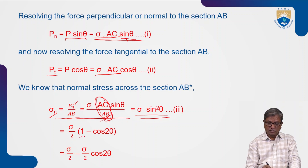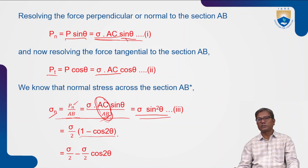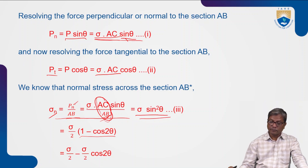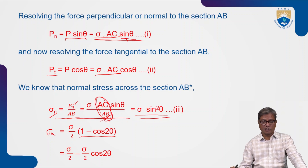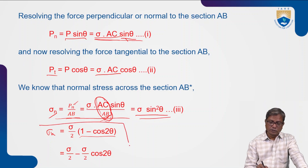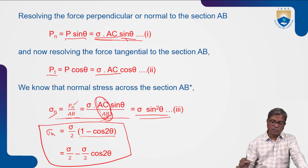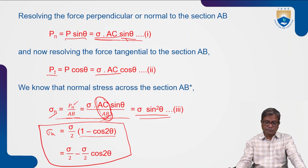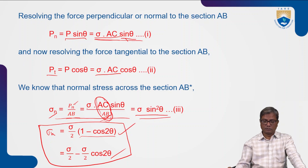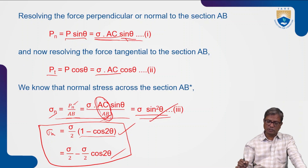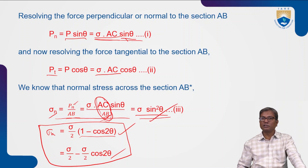Sin²theta is taken as (1 − cos2θ)/2. So the normal stress acting on inclined plane AB is sigma_n = σ/2 × (1 − cos2θ). This is generally expressed as σ/2 × (1 − cos2θ) or equivalently sigma × sin²theta.